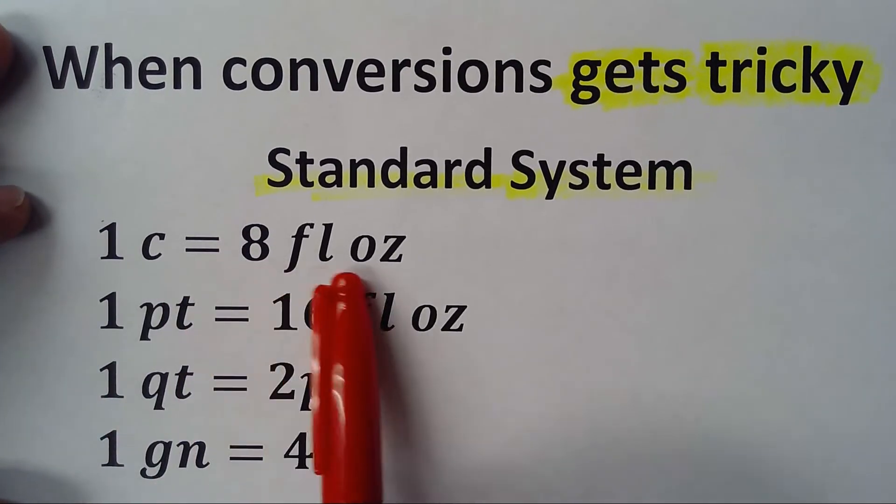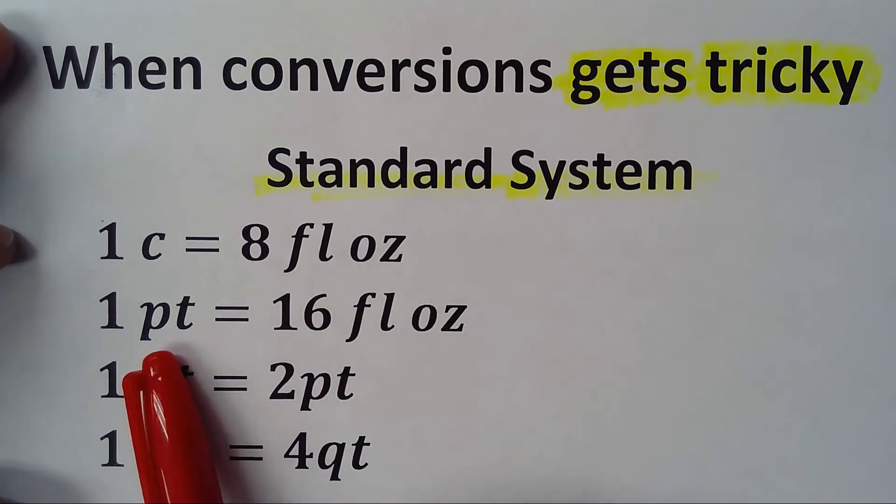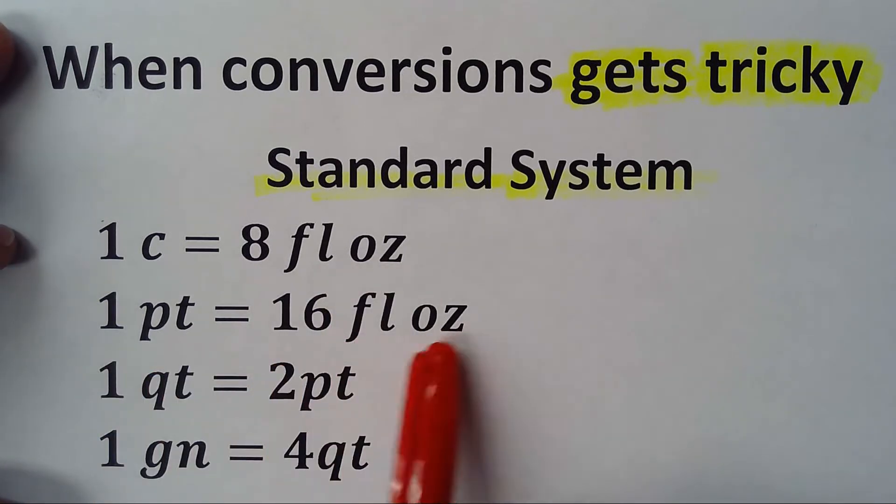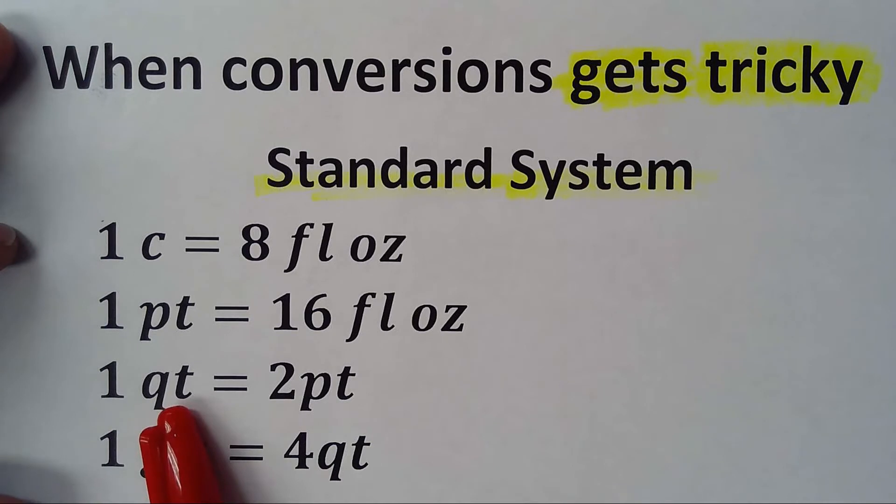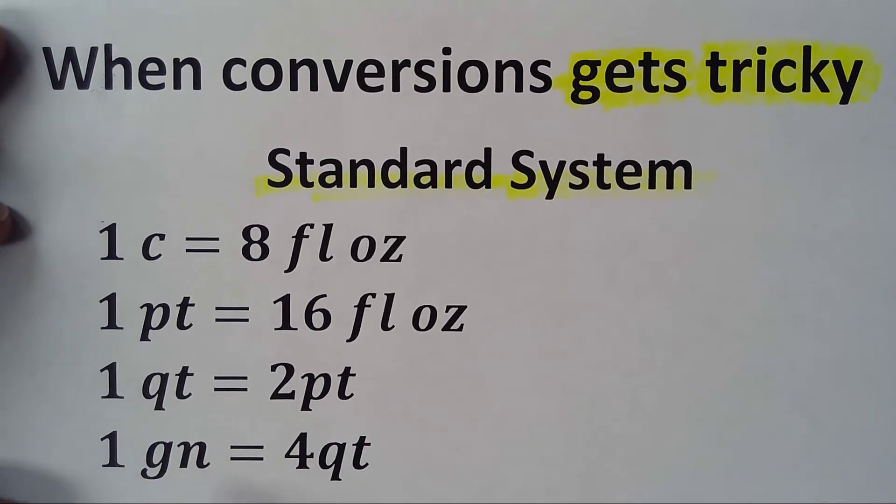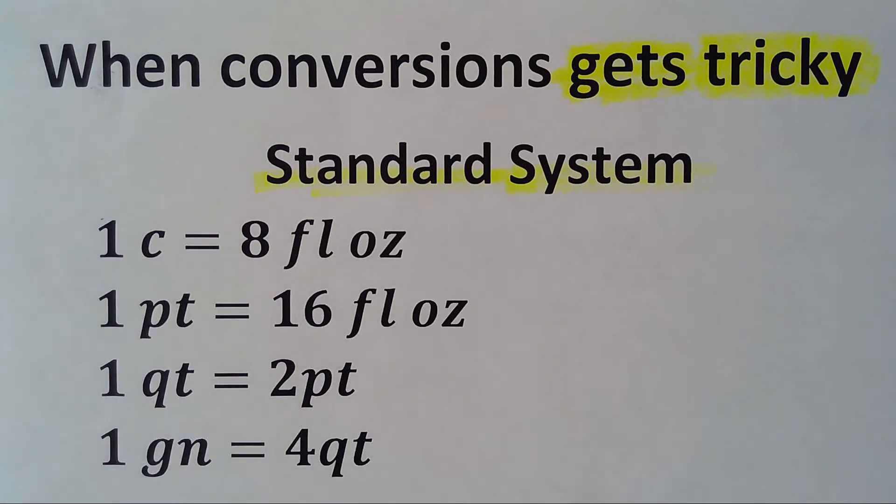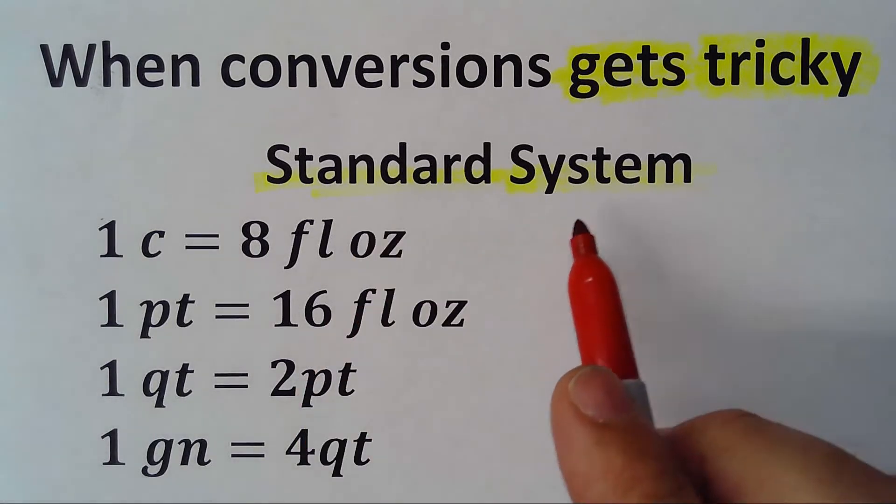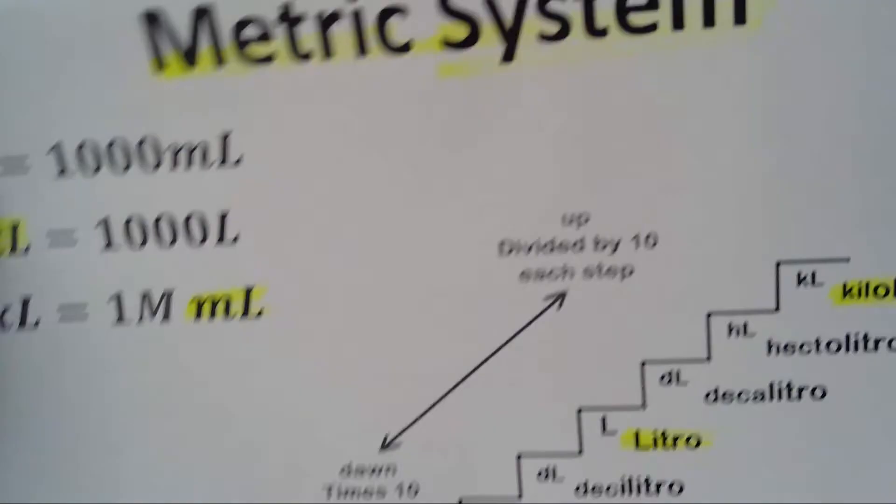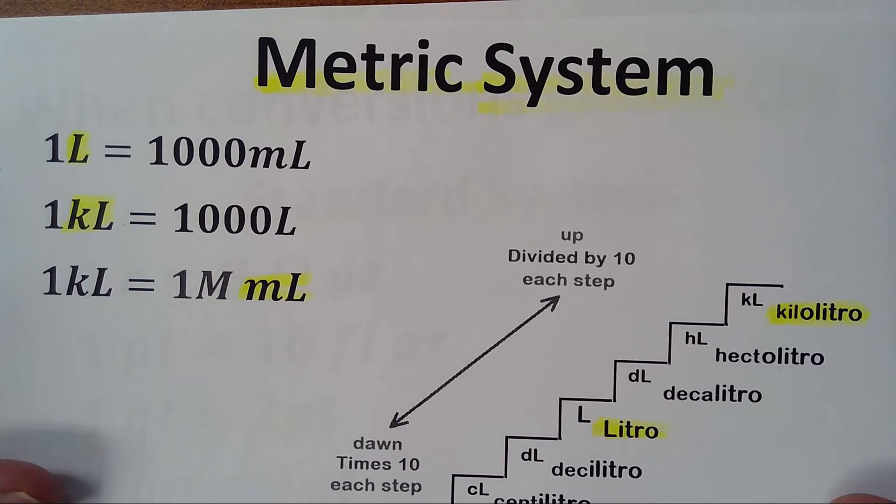One quart is two pints, one gallon is four quarts. Now this is the standard system. There is another system which is the metric system, which is more straightforward.